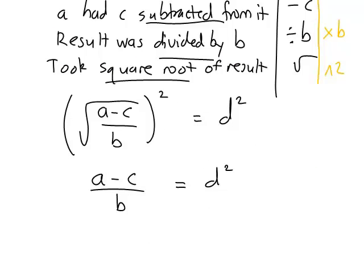You could write that line out again fully if you want. For convenience I'll just do it here. So we've got b multiplied by this whole expression is equal to b times d squared, which can just be written bd squared.